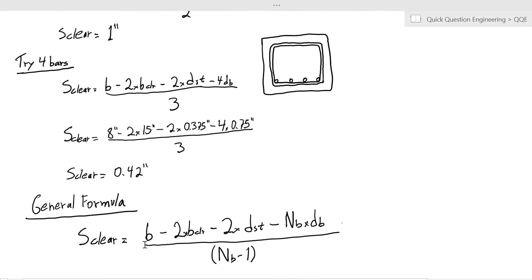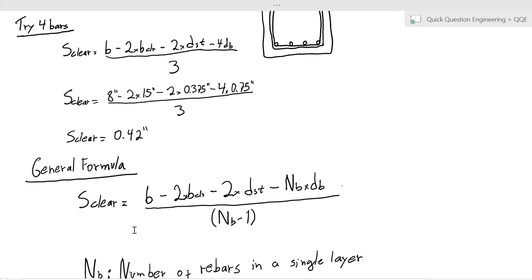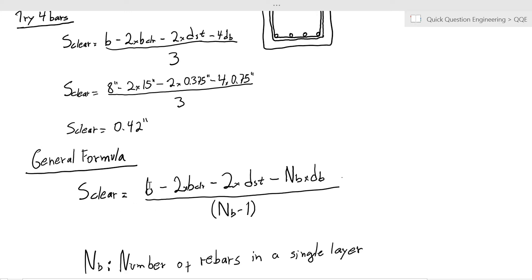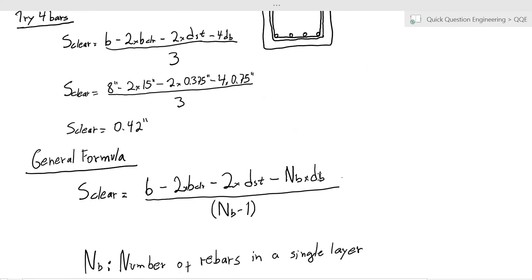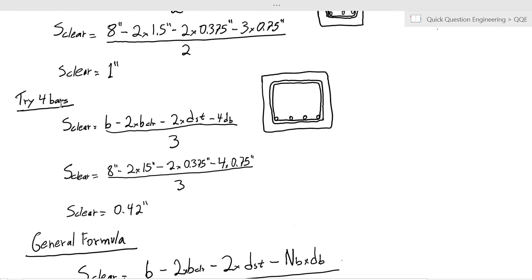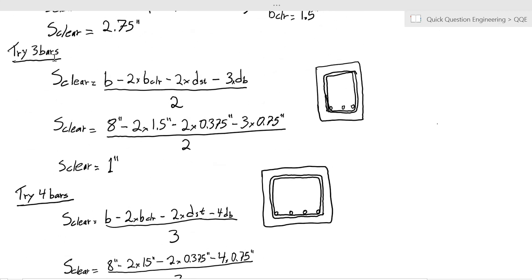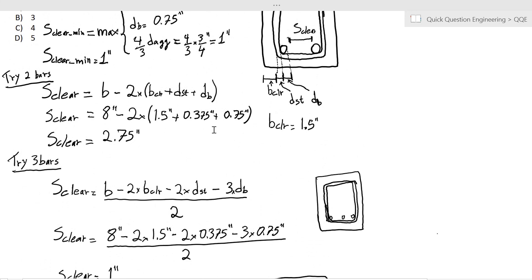Now if you just want to write down a formula for these types of problems so that you can easily solve a rebar placement problem during the exam, you can take this general formula which states that the clear spacing between rebars is the beam width minus two times the beam clear cover, minus two times the diameter of the stirrups, minus the number of rebars times the diameter of the rebar. And then the denominator will be the number of rebars minus one, which is essentially what we did: for four rebars we use three, for three rebars we use two, for two rebars we used one essentially for the denominator. So this is a handy formula that you can use for the exam or in a template that you're building.